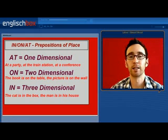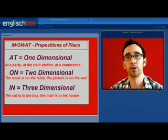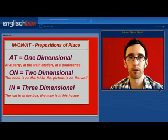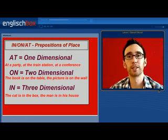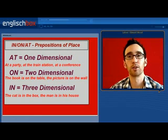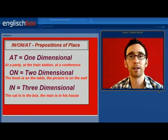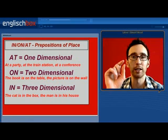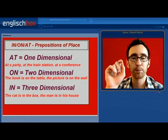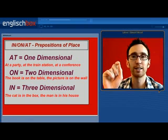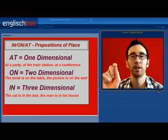At is one-dimensional, on is two-dimensional, and in is three-dimensional. So if someone says to me, I'd like to meet you at the train station, then I think of at as one-dimensional, and I think of it as a specific, precise and single point in space.